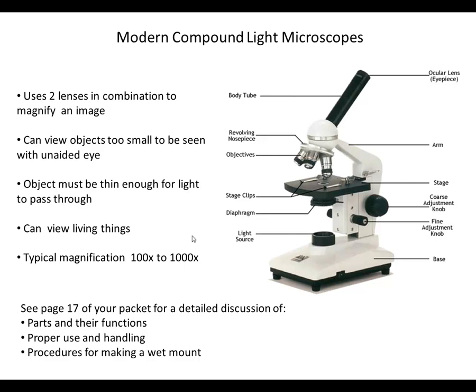A stereoscope, which we'll use later in the unit, allows us to look at three-dimensional features of larger or thicker objects. One nice thing about compound light microscopes is we can view living things — for example, a pond water sample could show microorganisms called protists, like amoeba or paramecium. Typical magnification ranges from 100 to 1000x; in class we use 40x for scanning, 100x for low power, and 400x for high power.